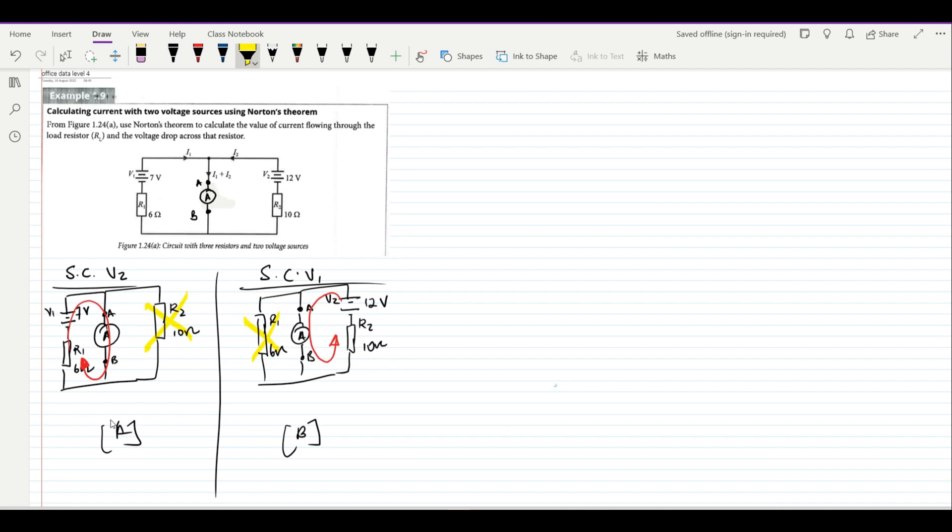So when it is in that case, it is simple and clear that only R1 for circuit A will receive the total current, and only R2 for circuit B will be receiving the total current. Now we'll be using that to calculate our Norton current.